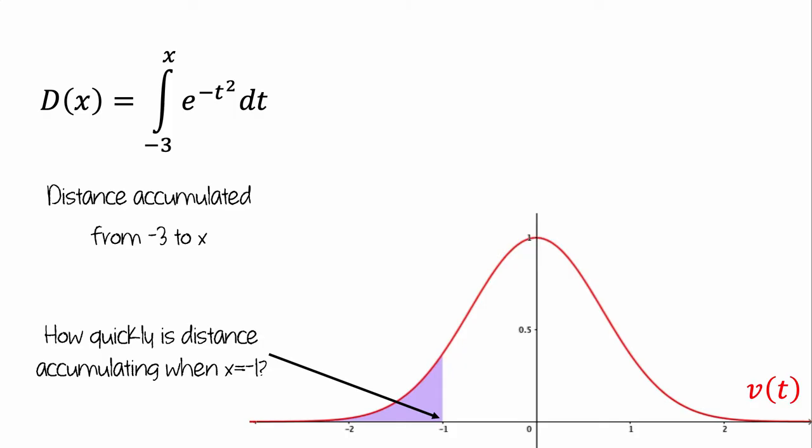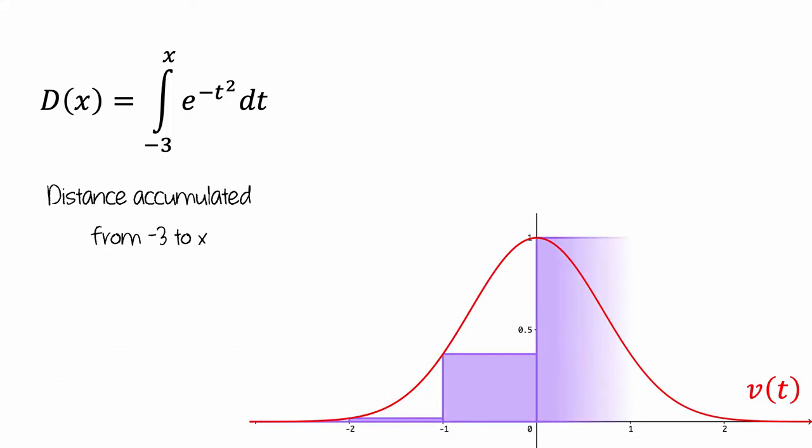To make things a little easier to think about, let's imagine a Riemann sum approximation of this total accumulated distance. Let's think about what this Riemann sum is telling us. If we look at one of these bars, we know that it has a width that corresponds to the amount of change in time. In this case, one second.